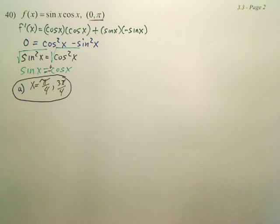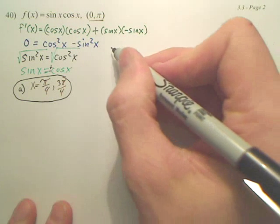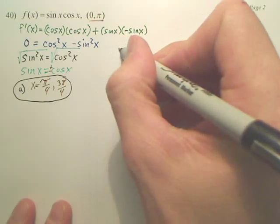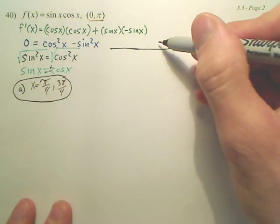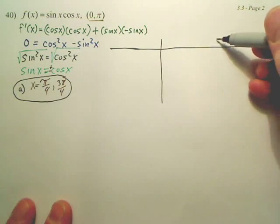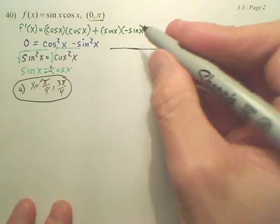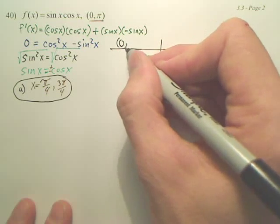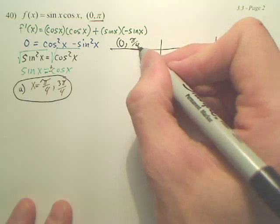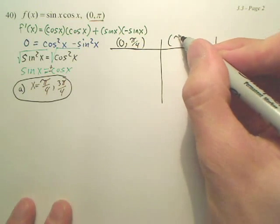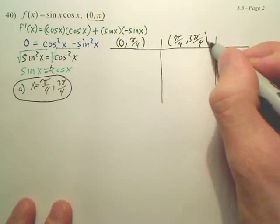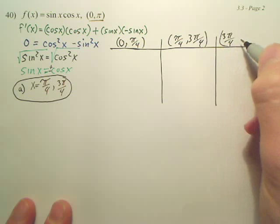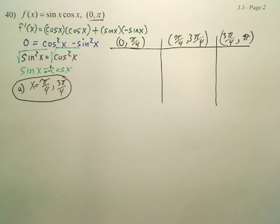What do we do with the critical numbers if we want to find where it's increasing or decreasing? We make a table. We have two points of importance, two critical points. And from this one, it's going to be from 0 to π/4. Then from π/4 to 3π/4.